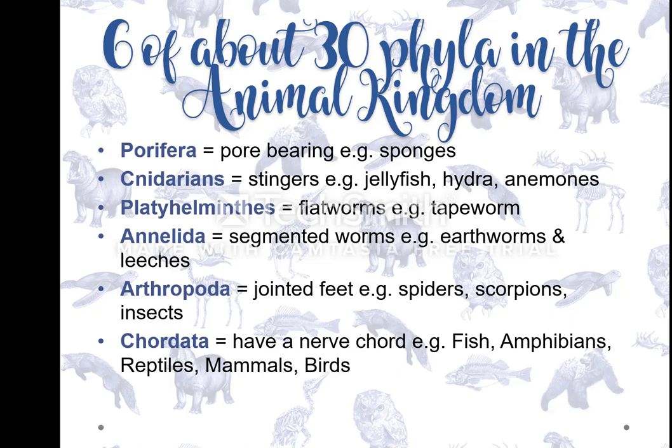There are six phyla we're going to learn about. First, Porifera — in the name it says 'pori', meaning pore-bearing organisms. Think of organisms with lots of pores and holes, like sponges. The next phylum is Cnidaria, known as the stingers. When you see Porifera, think sponge. When you see Cnidaria, think jellyfish, as long as you have one organism in mind, you'll be able to recognize pictures and characteristics based on that.